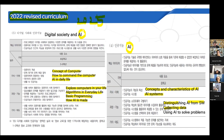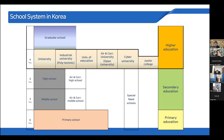Before explaining about practical cases, let me show the school system in Korea. In Korea, primary school is six years. Then three years of middle school and three years of high school — lower and upper secondary school. After that, students can attend university as undergraduates and then continue to graduate school.